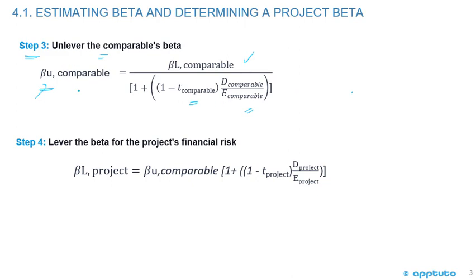Once you have the unlevered beta for the comparable, you calculate the levered beta for the project's financial risk using almost the exact same formula for the denominator, but substituting the project's tax rate and debt-to-equity ratio. So it's: beta unlevered of the comparable times the big bracket one plus one minus the tax rate of the project times the debt-to-equity of the project.